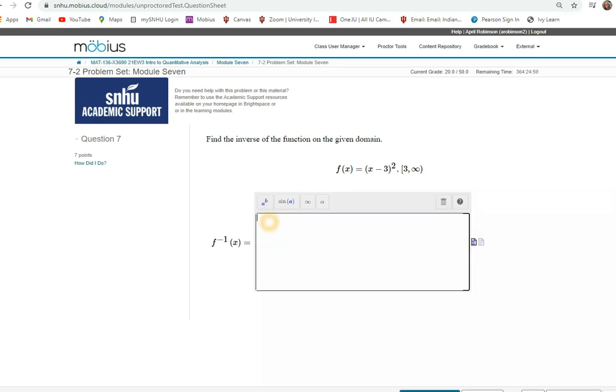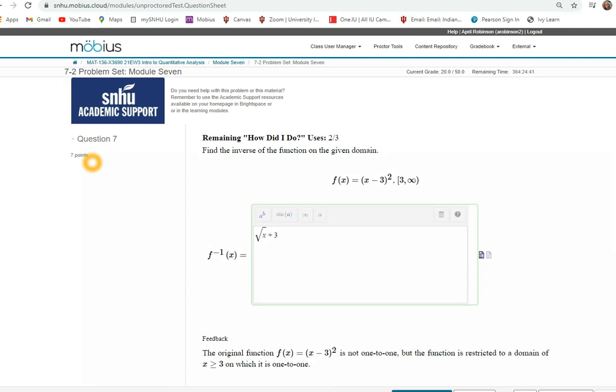And then I'm going to have the square root of X, and then make sure you scroll out of that before you type in plus 3. There we go. How'd I do? Yay, got the answer correct! All right, that's as easy as it is.